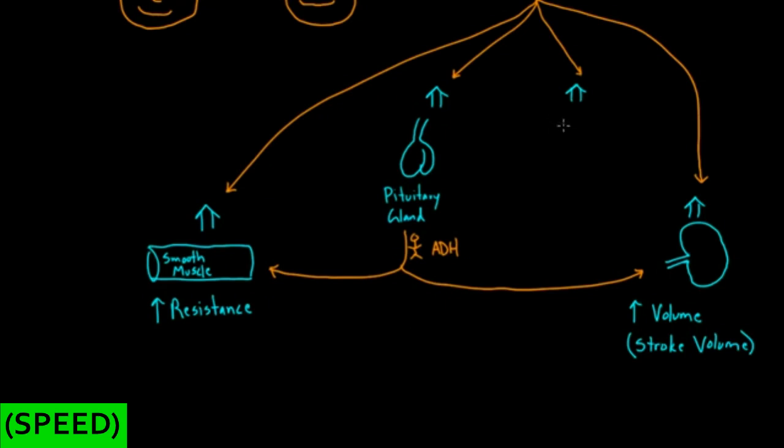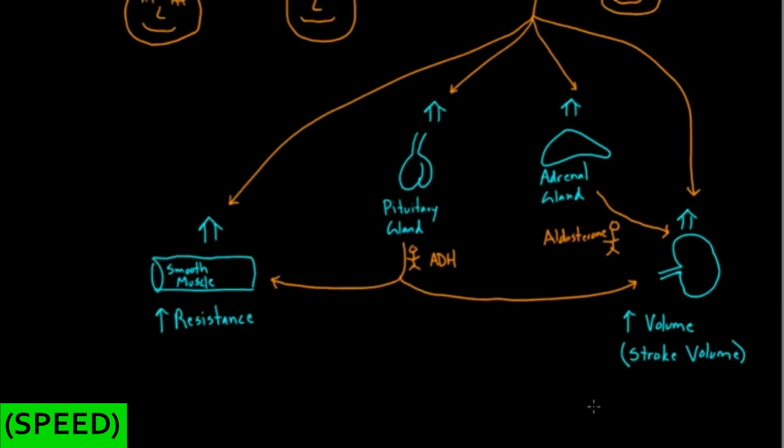Now the fourth cell type is going to be the adrenal gland. This adrenal gland is sitting on top of the kidney. This adrenal gland is also making a hormone because it's a gland, and this is called aldosterone. So you've got aldosterone and ADH that are also acting on some of the same cells. So aldosterone is going to act on kidney cells to increase volume, and ADH is going to act on the kidney and smooth muscle.